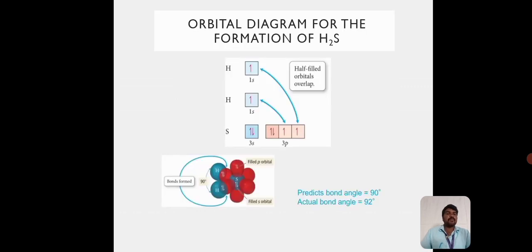The orbital diagram for the formation of H2S gas: Normally, hydrogen has one electron. Sulfur has 3s² 3p⁴ electronic configuration. The hydrogen has 1s orbital and sulfur has 3s orbitals and 3p orbitals. Here, the hydrogen is overlapped with the p orbitals to form the H2S molecule.